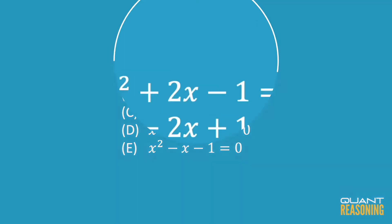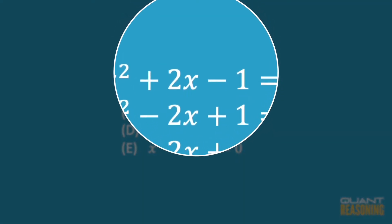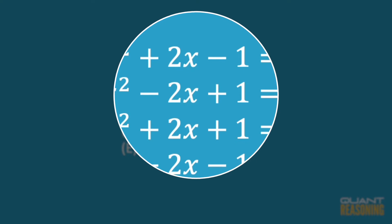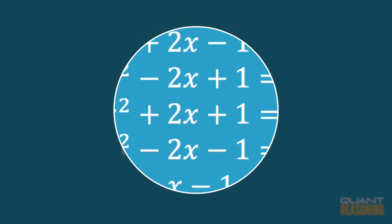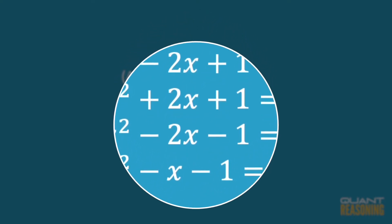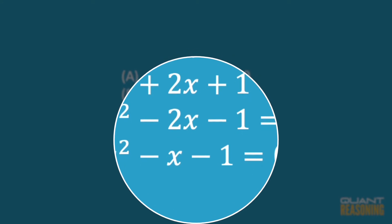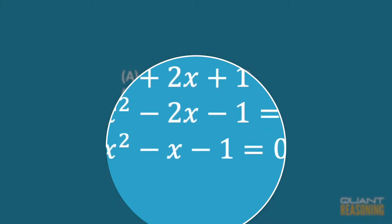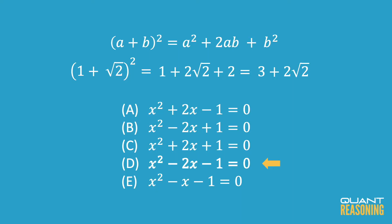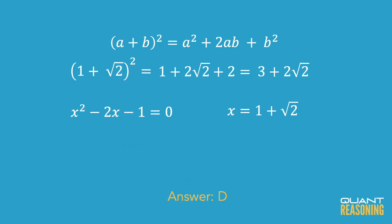As you imagine plugging in 1 plus root 2 into x in each of these, forget about the root 2 for a second. Just the 1, just plugging the 1 into each of these. The only way you're going to end up subtracting 3 is with answer choice D. It's the only one that would end up subtracting 3. So we can actually stop there and declare D as the right answer.